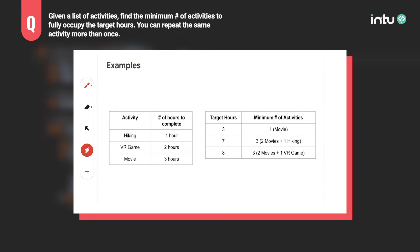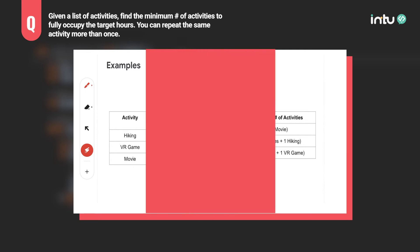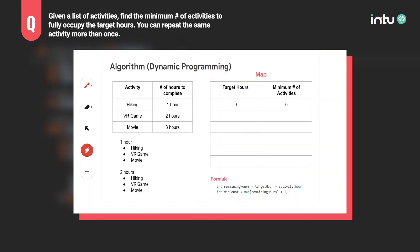One easy way to do this is to look at all possible combinations that add up to the target hours to see what's the minimum number of activities. This is the brute force approach. During the actual interview, I started with this brute force approach and actually failed one of their test cases because the algorithm simply took too long to complete.